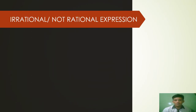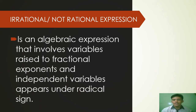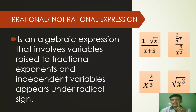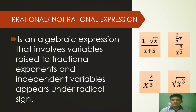Irrational, or not rational, expression is an algebraic expression that involves variables raised to fractional exponents, or where independent variables appear under a radical sign. These are the examples. Example number 1: 1 minus the square root of X, over X plus 5. What makes it irrational? It is because it has the square root of X, and the independent variable appears under a radical sign.